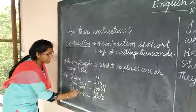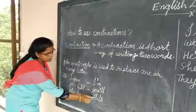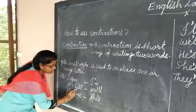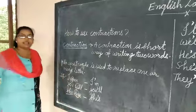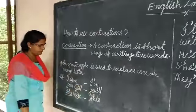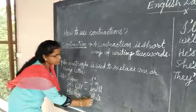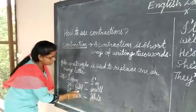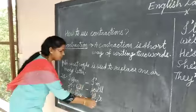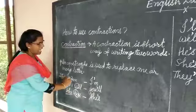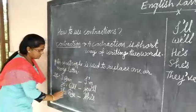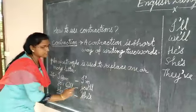Next example: 'she has.' The contraction form is 'she's.' Here, H and A are removed from 'has' and replaced by an apostrophe. So 'she has' becomes 'she's.' Once again to recap: 'I am' becomes 'I'm,' 'you will' becomes 'you'll,' and 'she has' becomes 'she's.'